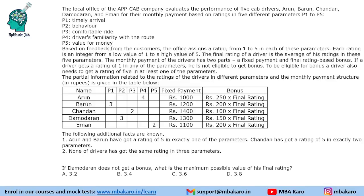Hello everyone, welcome to Aptitude Jab. This set from CAT 2020 Slot 1 DILR says that there is a cab company that evaluates the performance of 5 cab drivers for their monthly payment based on ratings in 5 different parameters P1 to P5.